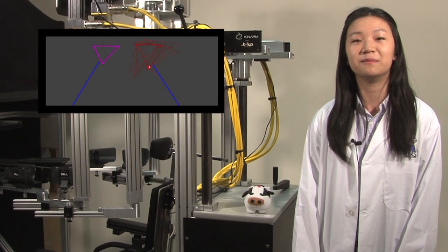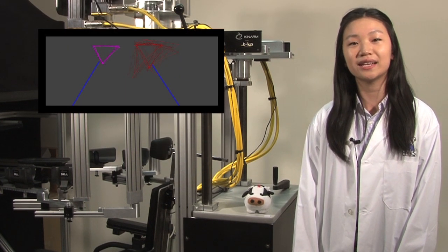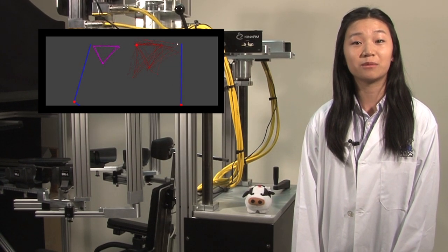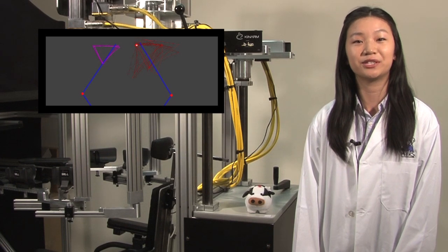The kinarm is an exoskeleton combined with virtual reality. The exoskeleton is custom fit to each subject's body. Then, the subject uses their arms to perform a series of tasks to measure proprioception.